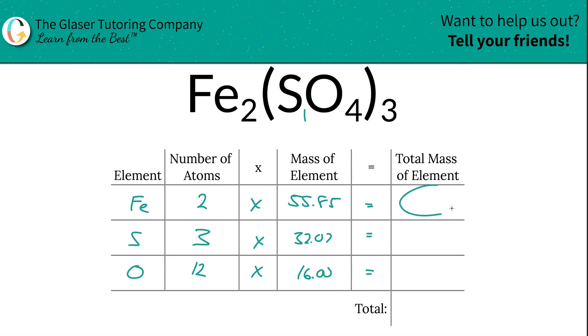Then to find the total mass of that element in the compound, we just have to multiply this row across. So the total mass of iron here will be about 111.7. The total mass of sulfur then is going to be 96.21. And then the total mass of oxygen is going to be 192.